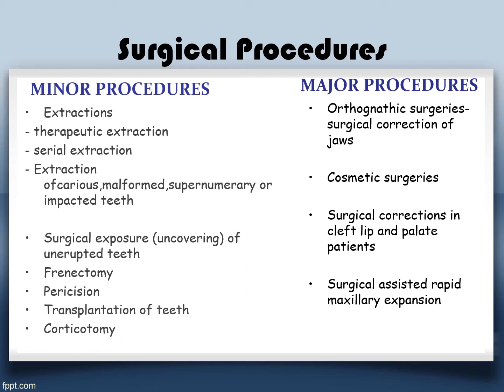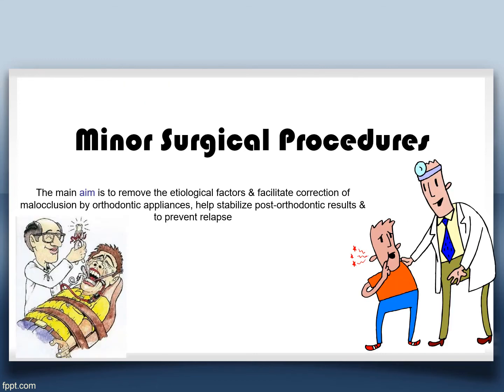Under minor procedures you have extractions — including therapeutic extraction, serial extraction, extraction of carious, malformed, supernumerary, or impacted teeth. Then you have surgical exposure of unerupted teeth, frenectomy, pericision, transplantation of teeth, and corticotomy. Under major procedures: surgical correction of the jaws, cosmetic surgeries, correction of cleft palate, and SARPE, which is surgical-assisted rapid palatal expansion.